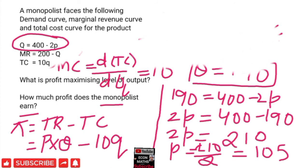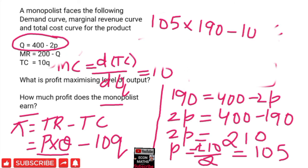Now the profit would be equal to price times quantity. In place of P we have 105, Q which we calculated earlier was 190, minus total cost which equals 10 times Q, where the equilibrium quantity was 190.